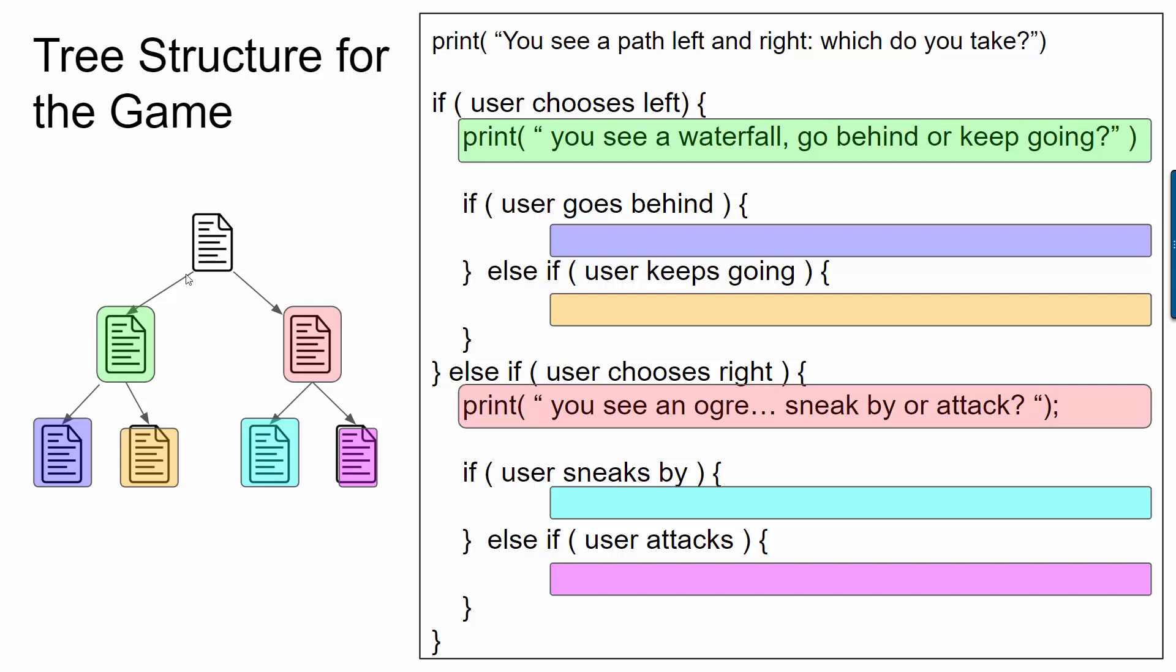If I'd chosen the green path where I choose left I see a waterfall and then I have two choices try and go behind it or keep going. And so now I have two more if statements to figure out which choice the user made from the green text and that would lead to two other possible parts of the story.